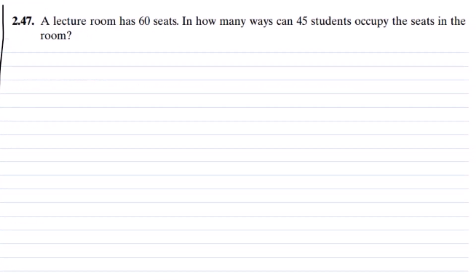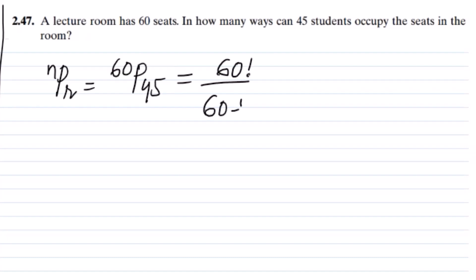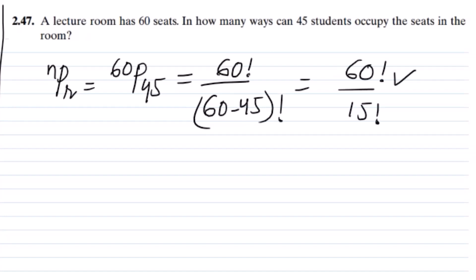In question 2.47, a lecture room has 60 seats. In how many ways can 45 students occupy the seats? That is a permutation question because the order of persons matters. Using the formula NPR with N=60 and R=45, it will be 60 factorial divided by 60 minus 45 factorial, which is 60 factorial divided by 15 factorial.